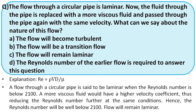Flow through a circular pipe is laminar when Reynolds number is below 2100. When we increase the viscosity, the Reynolds number decreases — since density, velocity, and diameter remain the same, Reynolds number is inversely proportional to viscosity. So by increasing viscosity, the flow will remain laminar. The right option is option C.